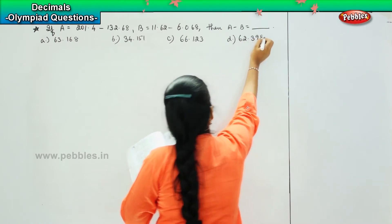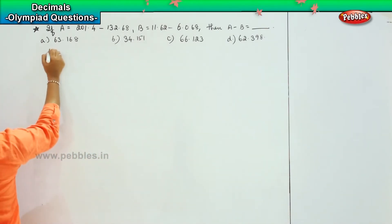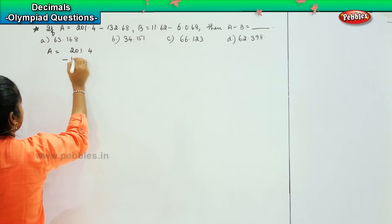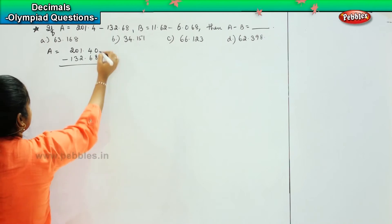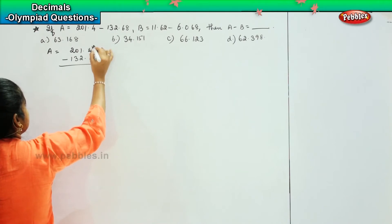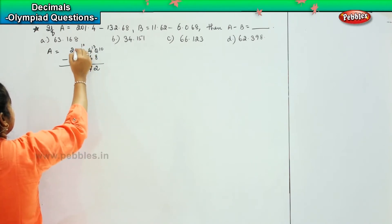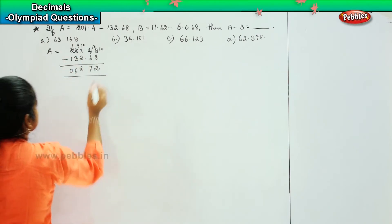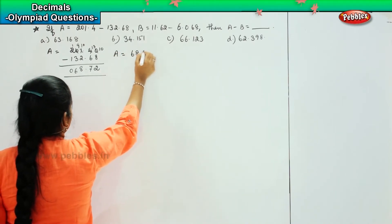So here they have said that if A's value is 201.4 minus 132.68, so here it will be 0. So 10 minus 8 is 2, then 13 minus 6 is 7. Here it will be 10 minus 2 is 8, then 9 minus 3 is 6, and this will be 0. So which means that value of A is 68.72.